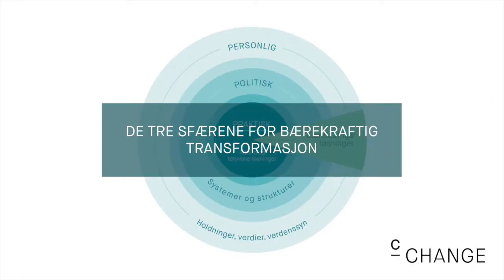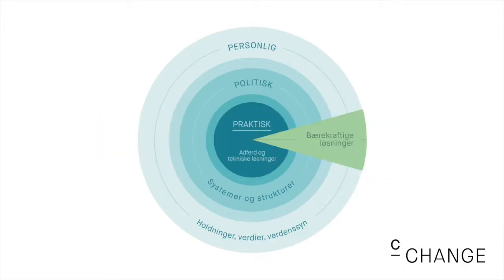The three spheres of transformation is a simple tool for understanding deliberate transformations to sustainability. The so-called practical, political, and personal spheres of transformation capture both the breadth and the depth of changes needed to realize a particular goal or outcome, such as the two degrees Celsius Paris target.